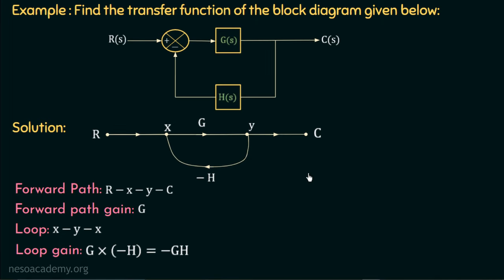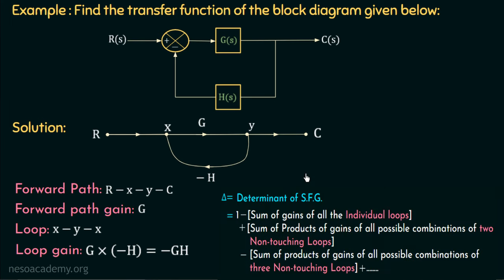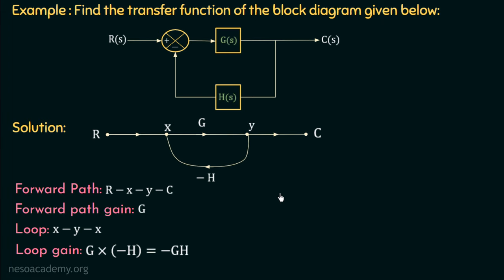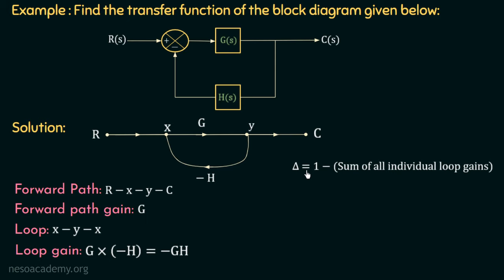The next step is to calculate the determinant of SFG. The formula is: Δ = 1 minus sum of all individual loop gains, plus sum of products of gains of all possible combinations of two non-touching loops, and so on. In this signal flow graph there is only one loop, so there are no non-touching loops and those terms equal zero. Therefore, Δ = 1 − (−GH) = 1 + GH. This is the determinant of this signal flow graph.